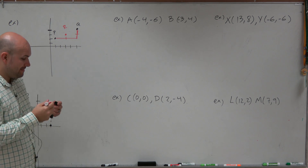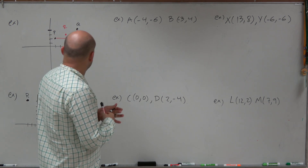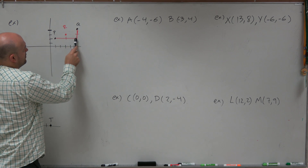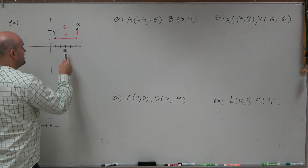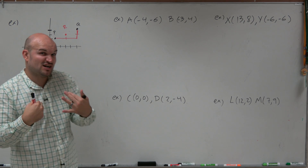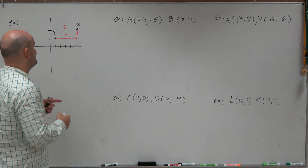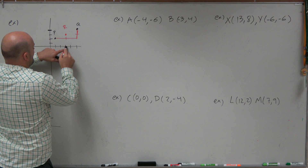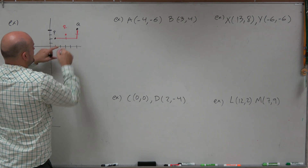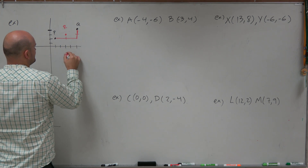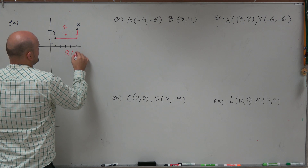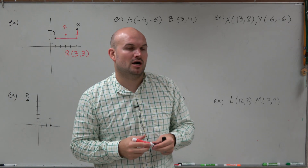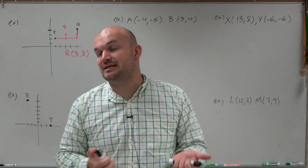I can verify this — going over 1, 2, and then 1, 2, up 1, up 1. Both those little hash marks are exactly at the midpoint. Now let's identify where that point is: 1, 2, 3, and then up 1, 2, 3. So it looks like my midpoint R is at (3, 3). And that's basically what we are doing in this example.